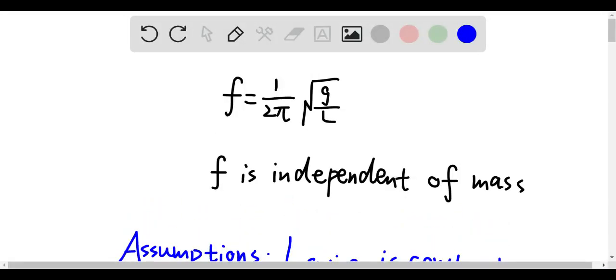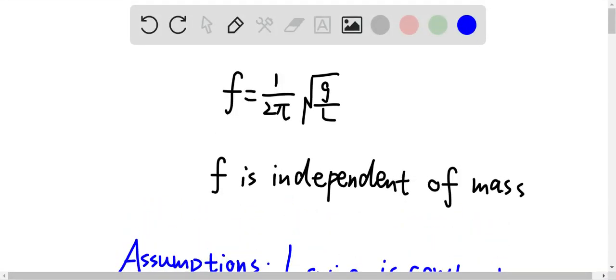Okay, so frequency is equal to 1 over 2π times square root g over L. So therefore, frequency is independent of mass because in the equation there's nothing to do with the mass in the equation.